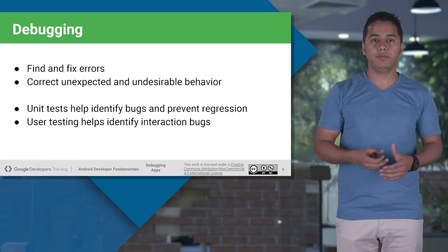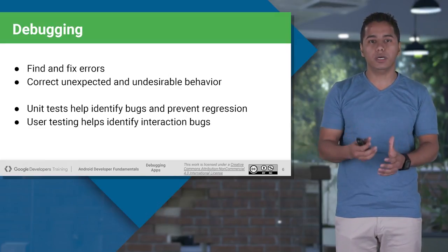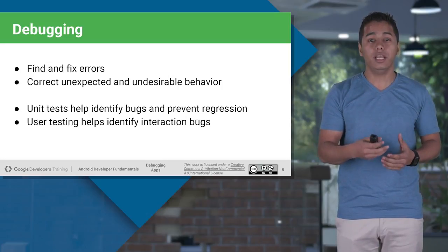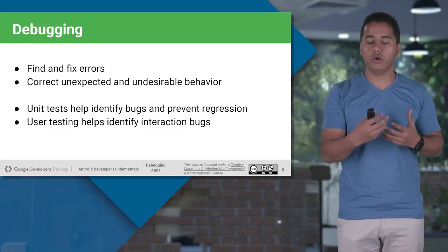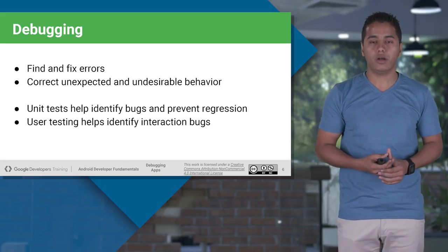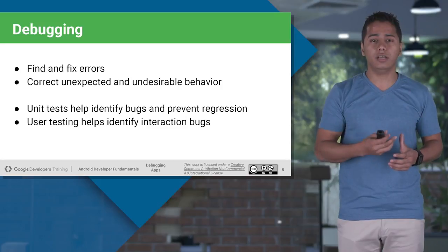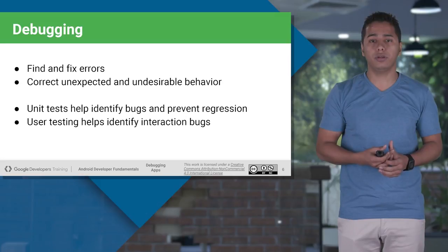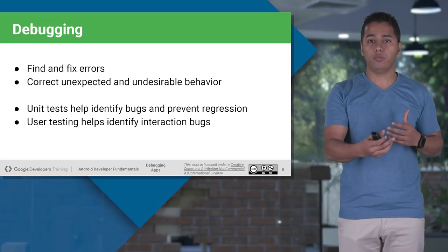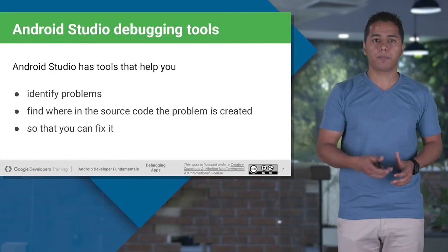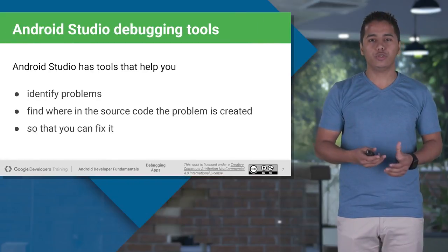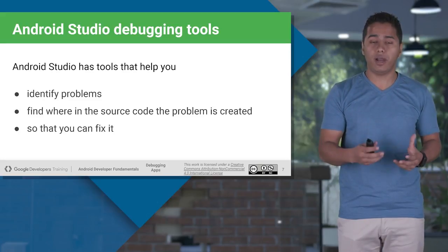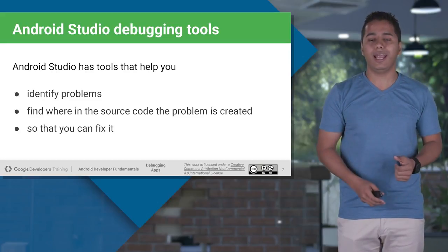So what is debugging? Debugging is where you fix those bugs — you find the bugs and fix the errors so that you do not get undesired results. Testing is one of the ways to find bugs at the early stages of development itself. There will be two types of testing discussed in later sections: UI testing and unit testing. Android Studio provides different debugging tools which are perfectly capable of identifying the problem inside the source code so you can fix it.